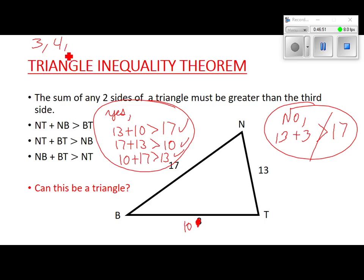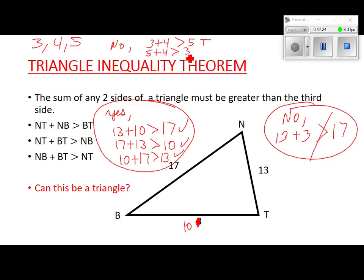If I give you numbers like 3, 4, 5 — can that be a triangle? Let's check: 3 + 4 > 5? Yes. 5 + 4 > 3? Yes. 3 + 5 > 4? Yes. So we change our answer to yes, that does work. You've got to be able to write it out and prove it.